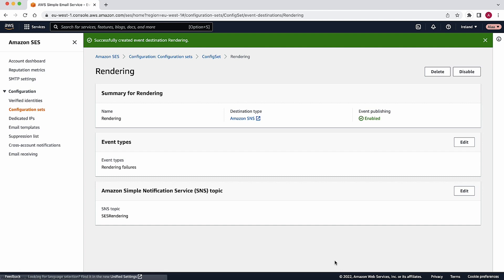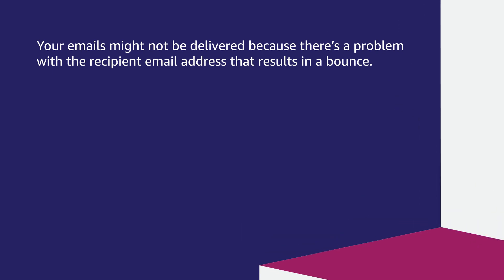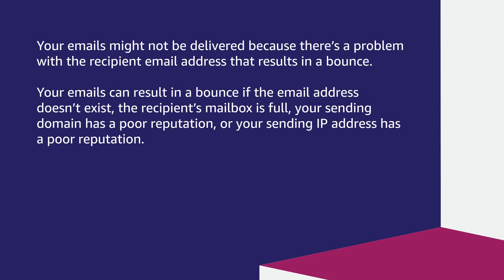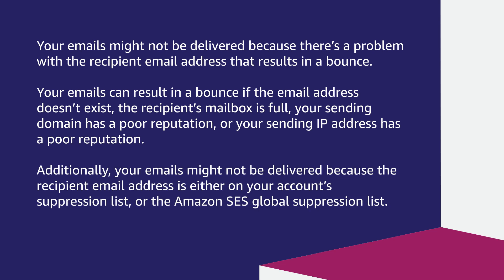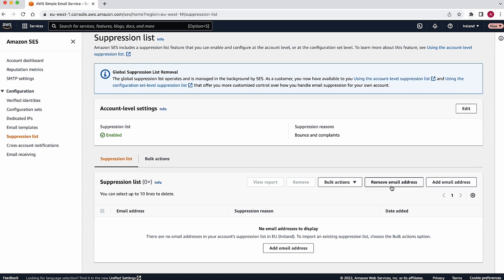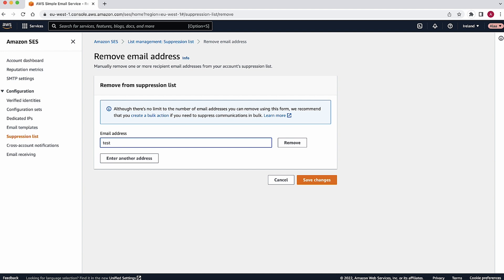Next, issues with the recipient email address. Your emails might not be delivered because there is a problem with the recipient email address that results in a bounce. Your emails can result in a bounce if the email address does not exist, the recipient's mailbox is full, or your sending domain or sending IP address has a poor reputation. Additionally, your emails might not be delivered because the recipient email address is on your account suppression list or the Amazon SES global suppression list. To remove an email address from your account suppression list, refer to the steps mentioned in the SES documentation, linked in the associated Knowledge Center article.